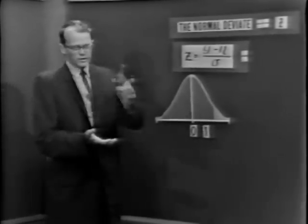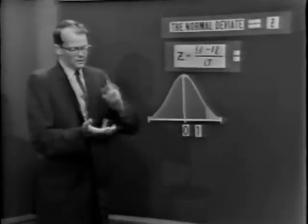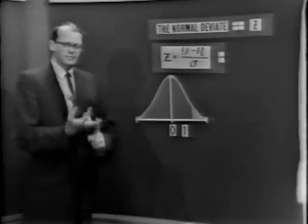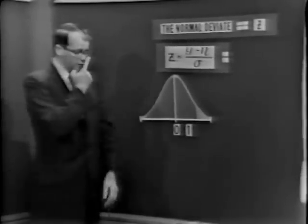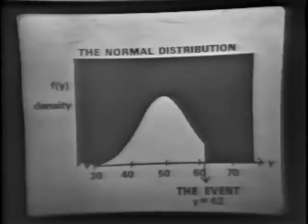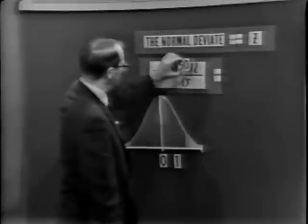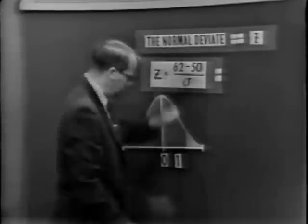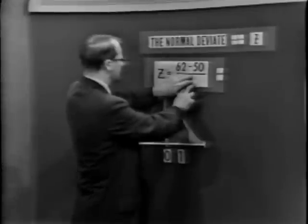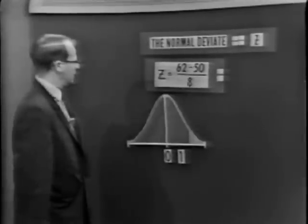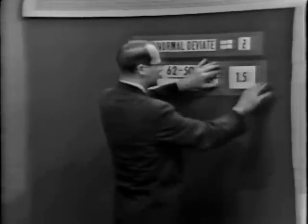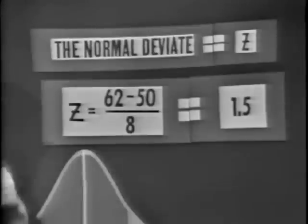So let's do our problem. The original problem: the mean is 50, the variance is 64, and the event is Y equals 62. What's the probability of that event or something more extraordinary? Y was equal to 62, the mean was equal to 50, and the standard deviation — square root of variance 64 — is 8. So Z equals 62 minus 50, divided by 8. That's 12 divided by 8, which equals 1.5. We have now observed a normal deviate equal to 1.5.